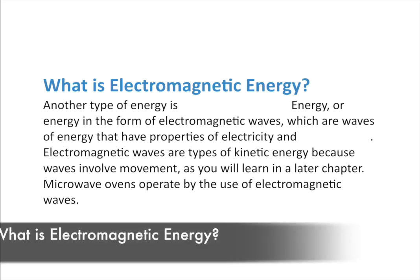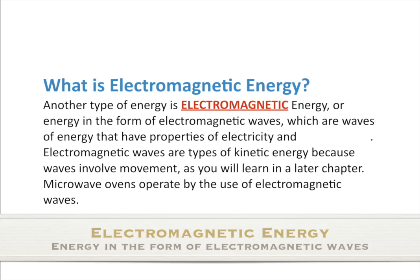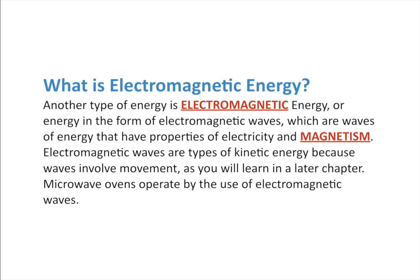Another type of energy is electromagnetic energy — the energy in the form of electromagnetic waves. Electromagnetic waves are waves of energy that have properties of both electricity and magnetism. Because they're waves, they're kinetic energy, since waves involve movement. In a later chapter we'll talk about waves in general and the electromagnetic spectrum. Light would be a good example, as well as radio, x-rays, and gamma rays.